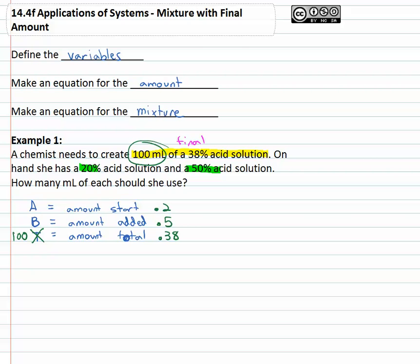So let's see if we can come up with a couple equations. For the amount of stuff, we started with A, we added to it B, and we ended up with a hundred of stuff. A hundred milliliters of stuff.